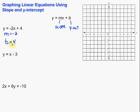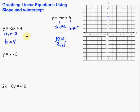We start at the b, which is the y-intercept. The y-intercept is the place where our line crosses the y-axis. The y-axis is the vertical axis. In this case, this one crosses at 4, so we make our first point at 4 on the y-axis. Then we use our slope to get additional points. Remember, the general form of slope is rise over run. If we can write the slope as a fraction, we can use the rise and the run to give us additional points.